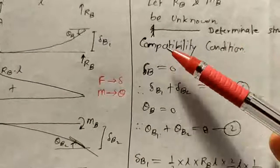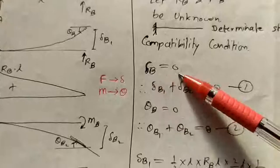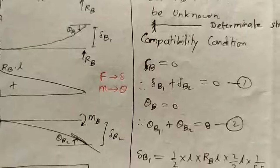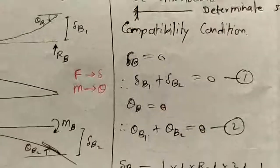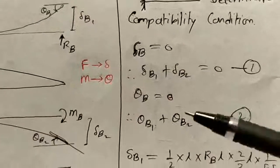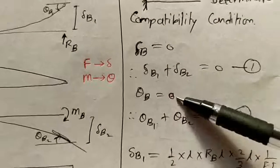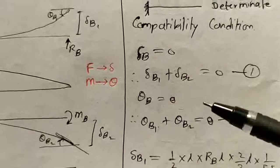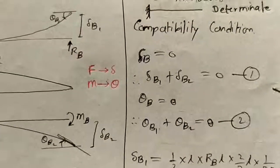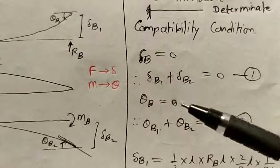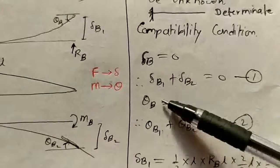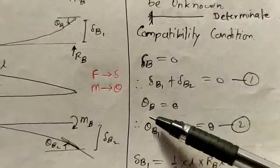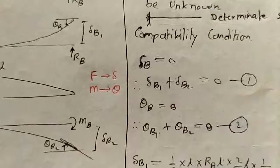Now we apply the compatibility conditions. Delta B equals 0 and theta B must equal theta, because in this example joint B is rotated by theta radians in the clockwise direction. Since it is clockwise, we take theta B as positive. These are the two compatibility conditions.